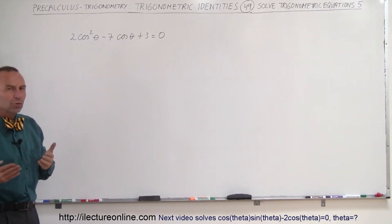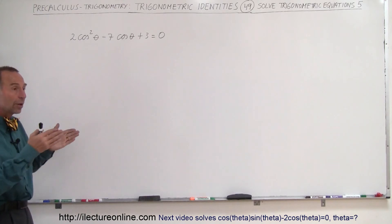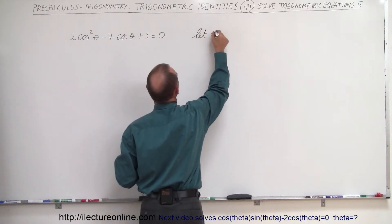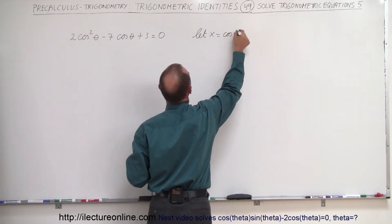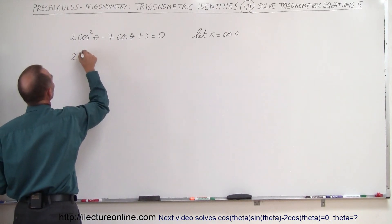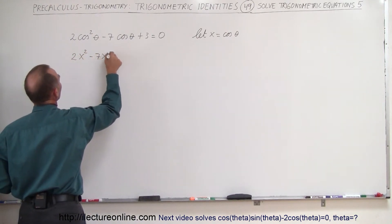So we're going to make a substitution to x to make it into an algebraic equation, solve for x, and then convert back to the cosine of theta. So let x equal the cosine of theta, and let's see what the equation looks like now. So we end up with 2x squared minus 7x plus 3 equals zero.